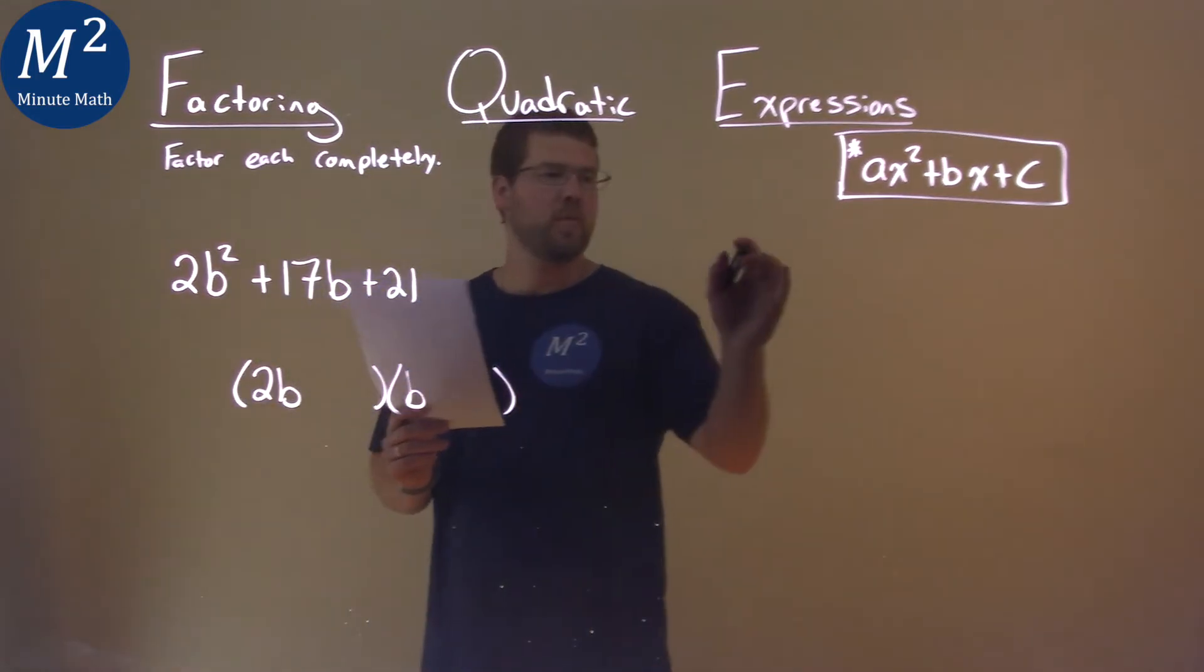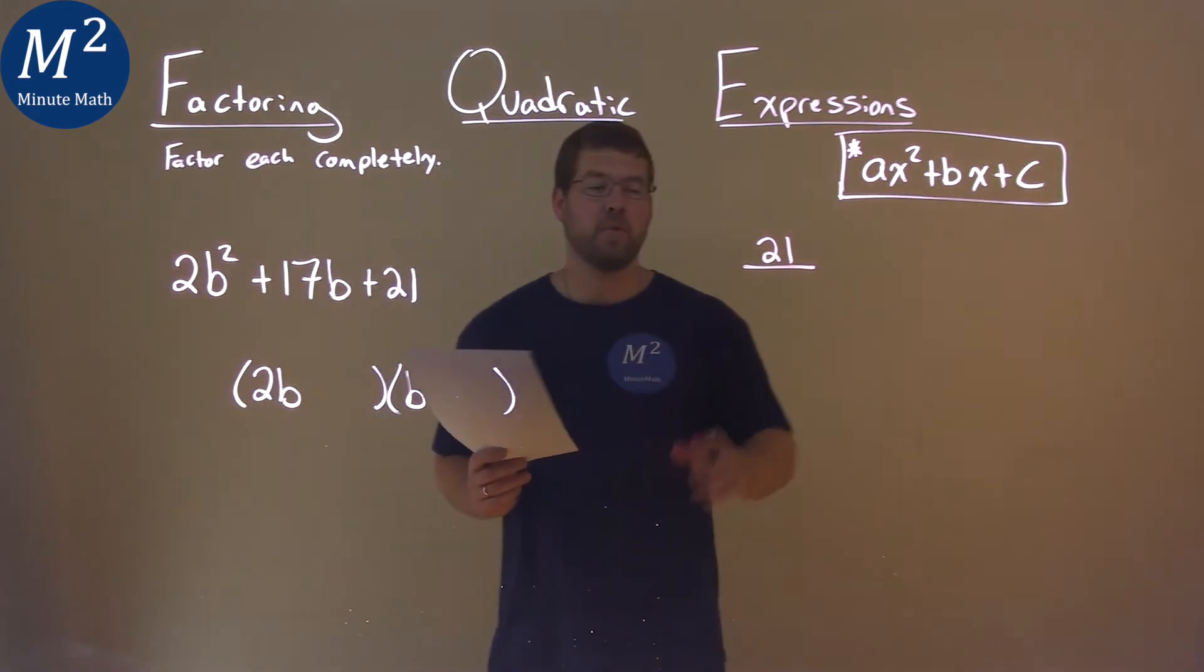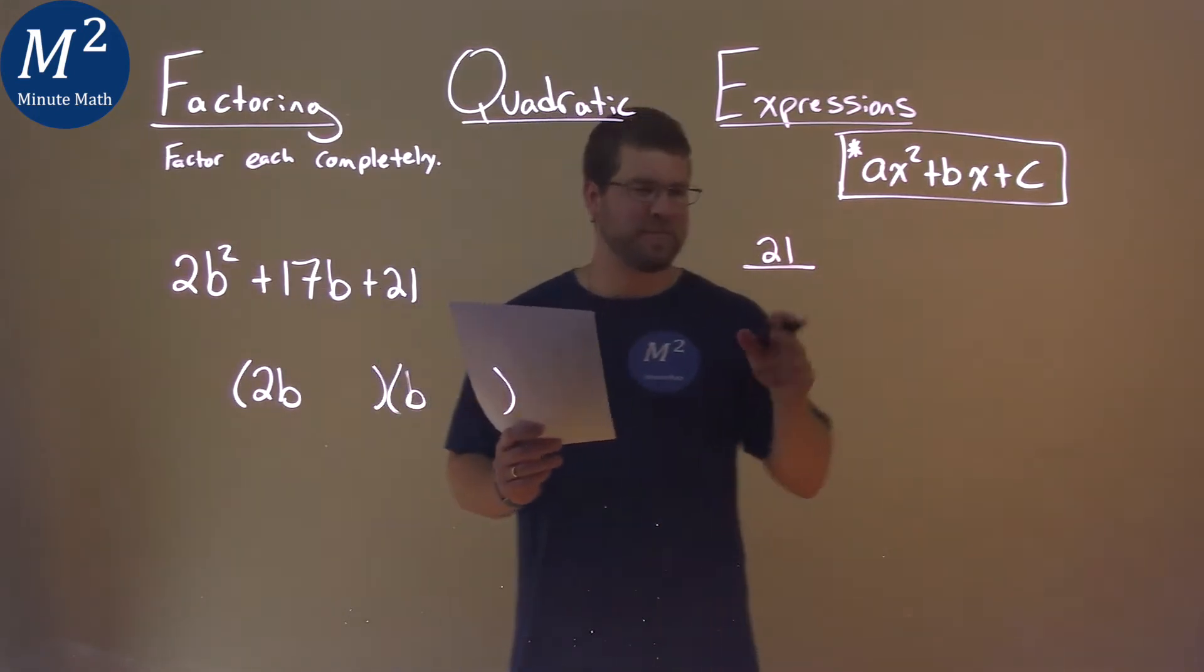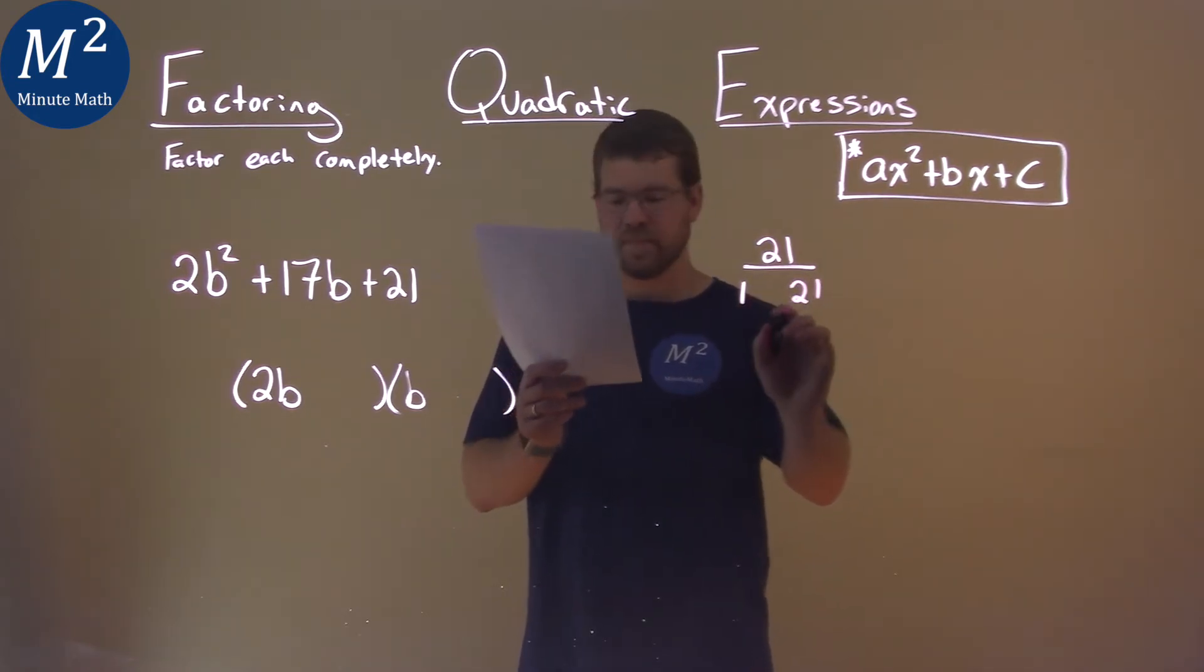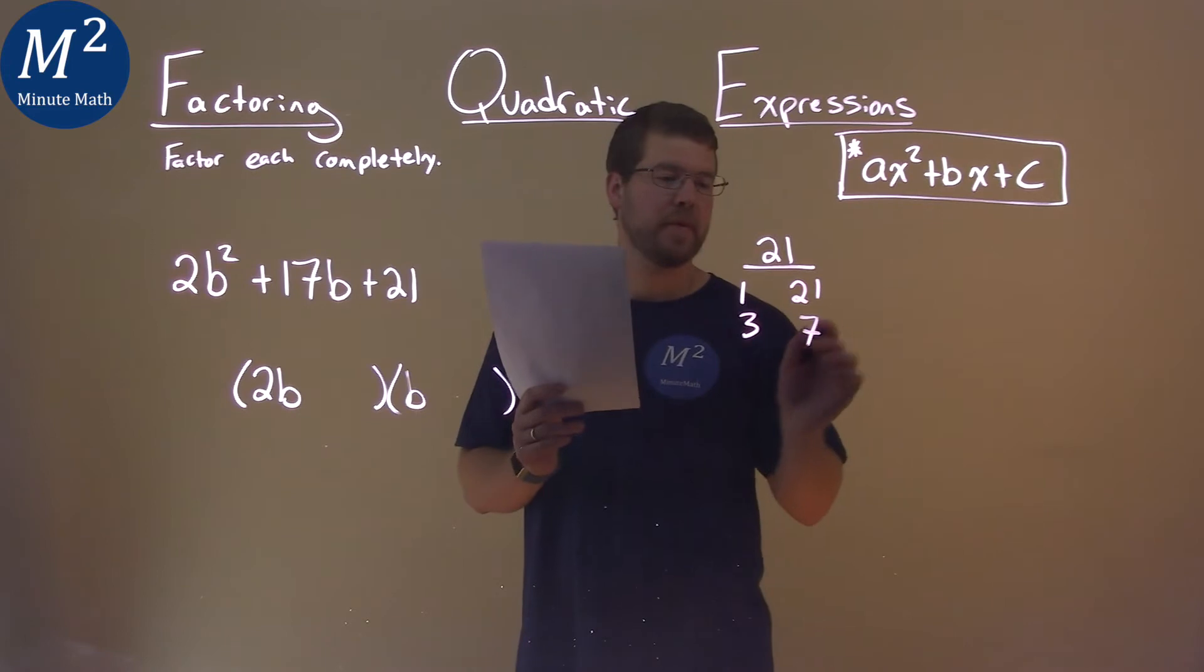So now look at 21. I want to find the c value. Find two numbers that multiply to 21 and list them all, and that's 1 and 21, and 3 and 7.